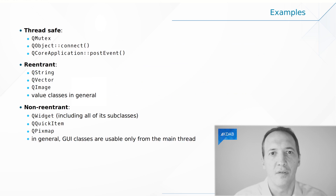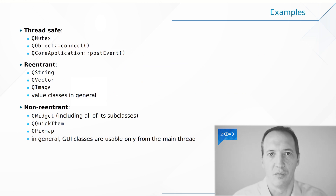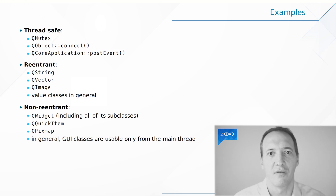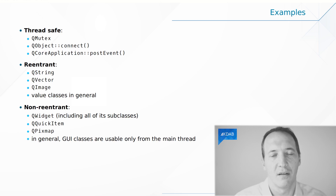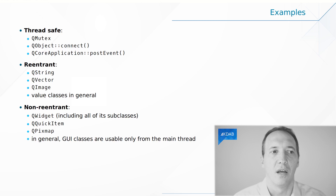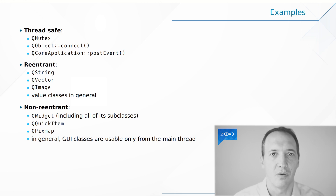If you look at Qt, there are a few thread safe classes like QMutex. It is okay to use QMutex — the same instance — in different threads; that's the whole point. We can call QObject connect from multiple threads on the same object. And we can do things like posting events on the same QCoreApplication — there is only one, and that's fine.